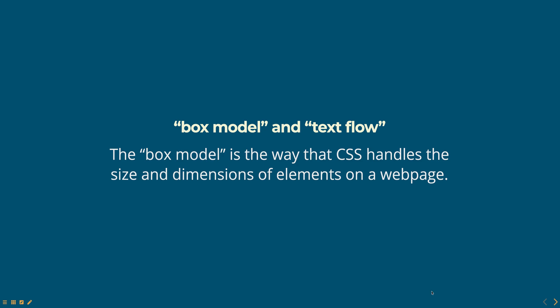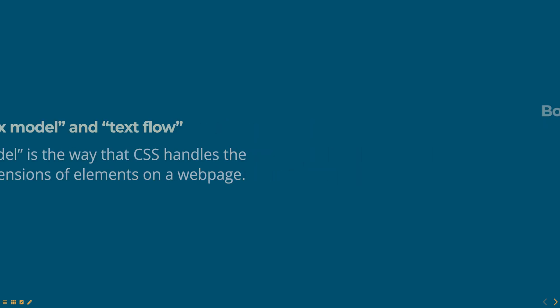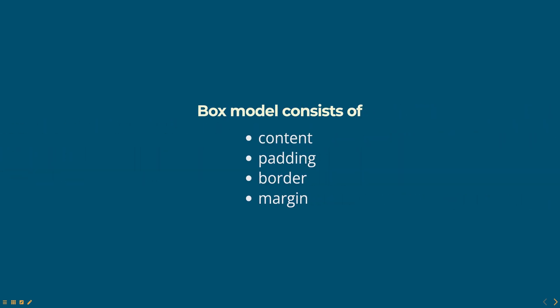Every HTML element is considered to be a rectangular box and the Box Model defines how the size of the box is calculated. The Box Model consists of four parts: content, padding, border and margin.